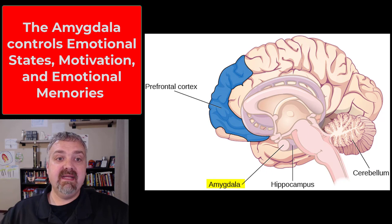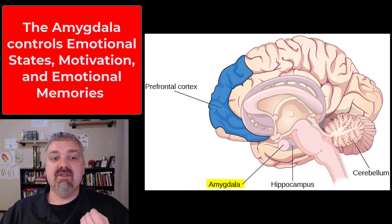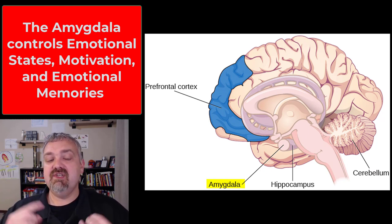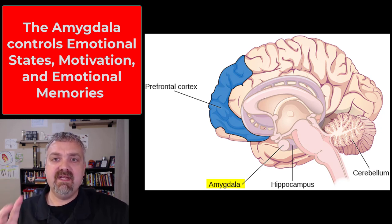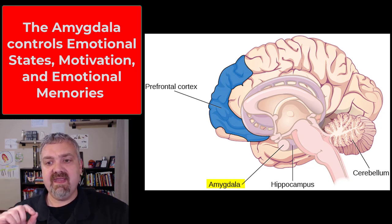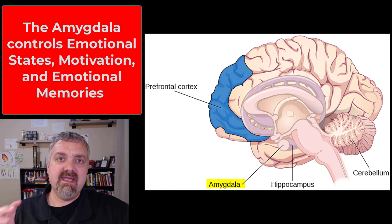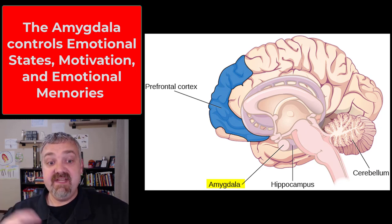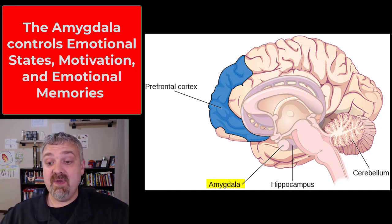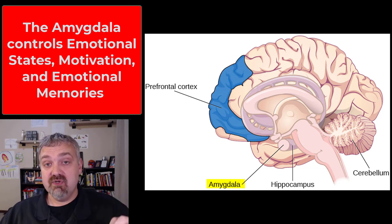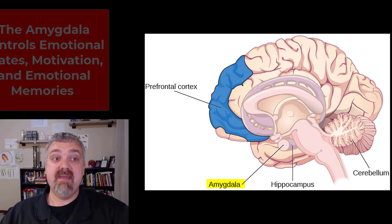So the parts here: the amygdala — the main things here are emotional states and motivation. It does play a role in memory consolidation, but when you think memory, I want you thinking hippocampus. The amygdala is important in fear-based memories and really emotional memories. This is why we remember the really bad stuff the most, sadly. So for the amygdala, just think fear, emotions, motivation, and fear-based memories.